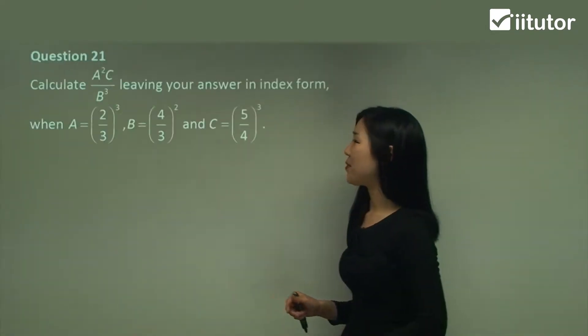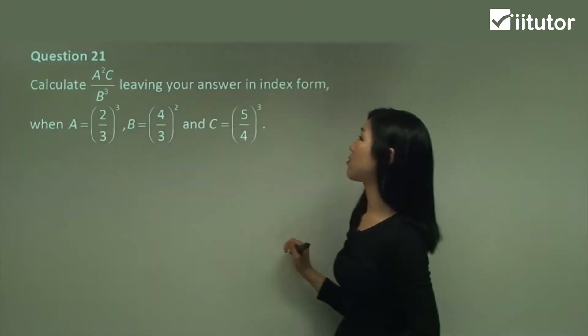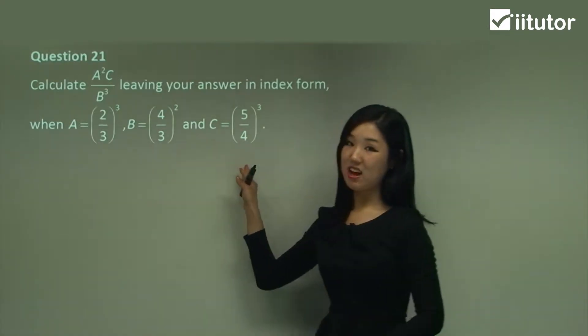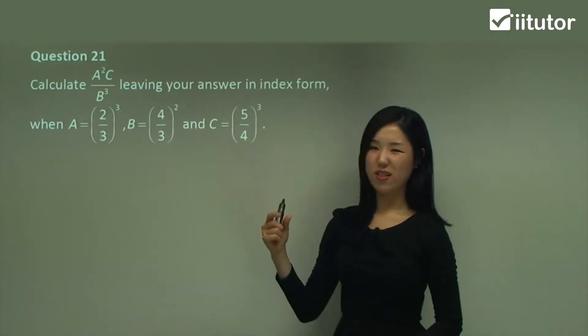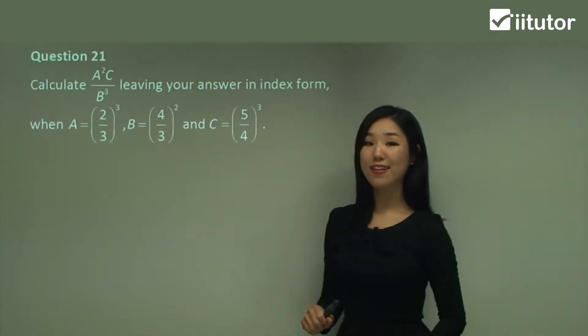Starting with question 21, calculate this expression here leaving your answer in index form and they give you what A, B and C are. So B and A, B and C are quite large fractions aren't they? They've got some different types of powers. Let's work it out.